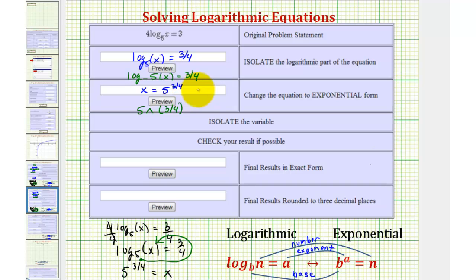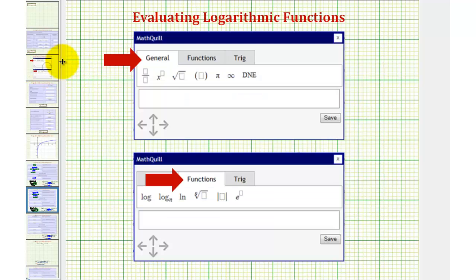Or click in the answer cell, click on the small yellow arrow, and then under the general tab, we can use this option here to enter the exponent. And by using this option, we would not have to enter the parentheses around the exponent. This would take care of the parentheses for us.